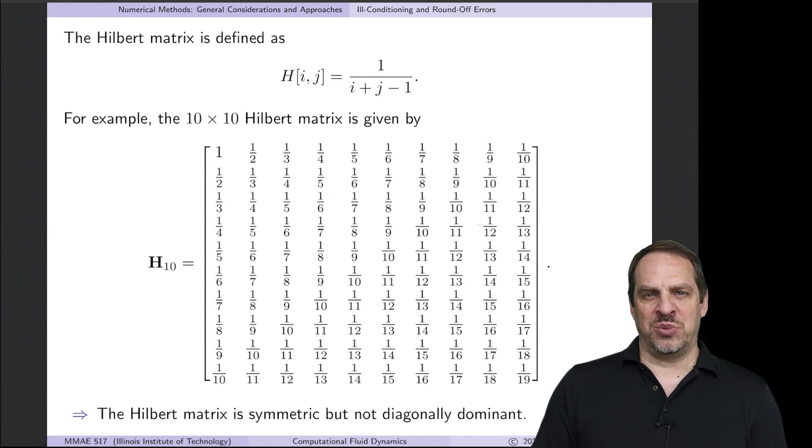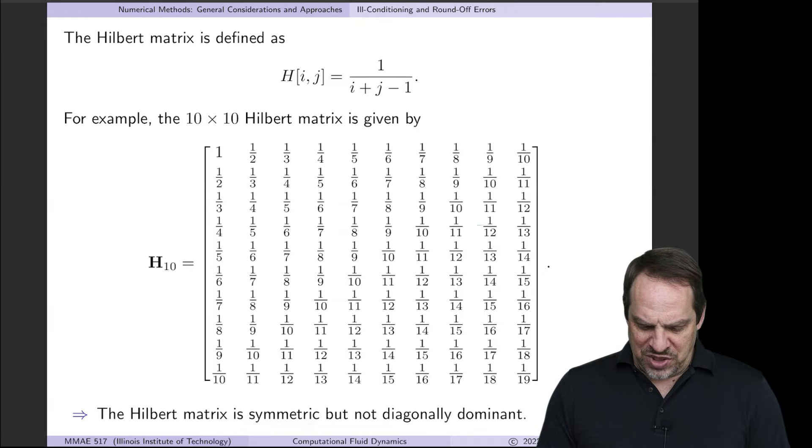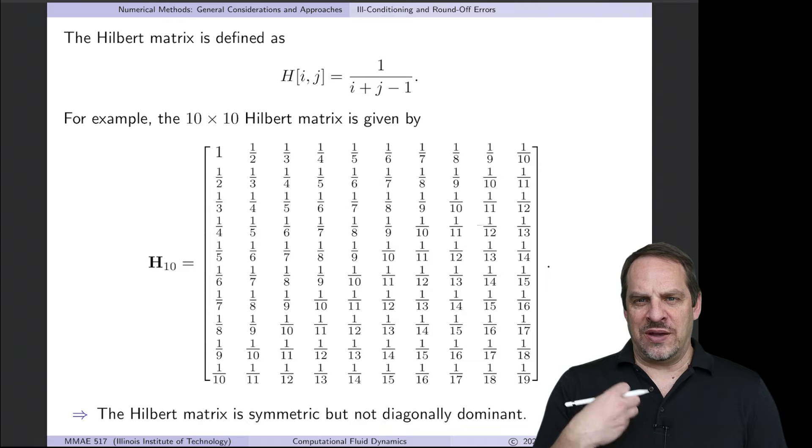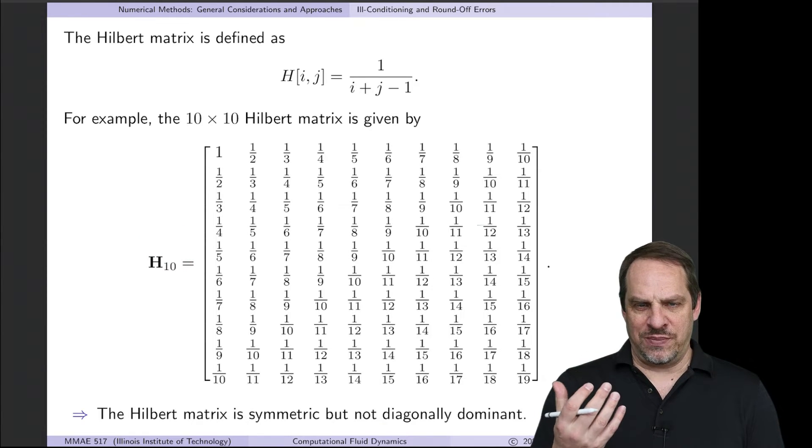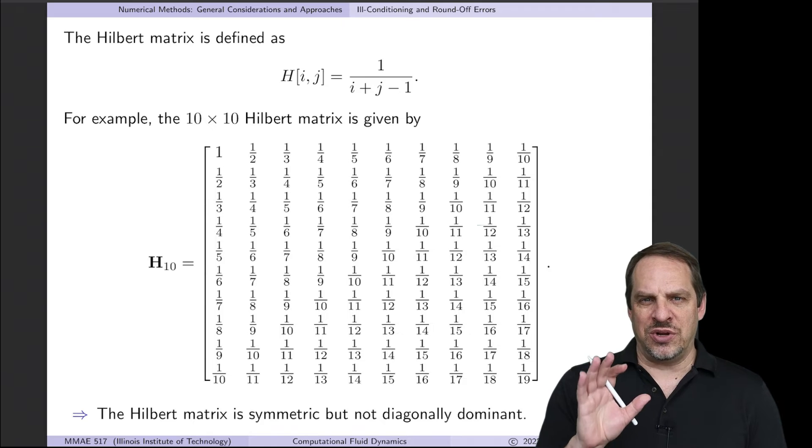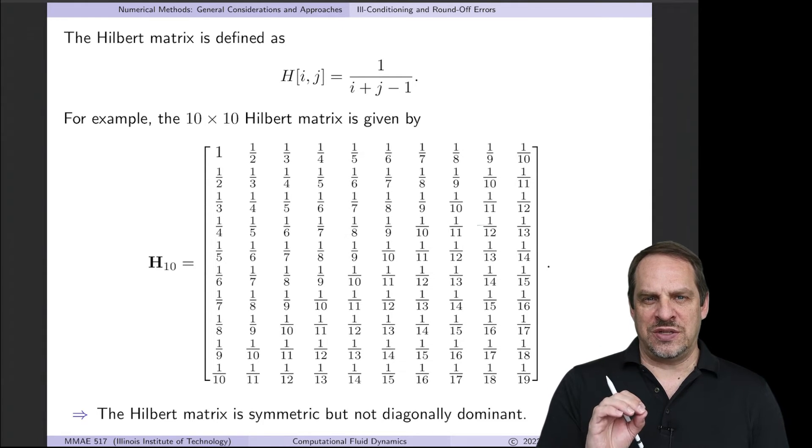You can try different sizes of Hilbert matrices and run through the same things that I'm going to do here. Now, the first thing you'll notice is the matrix is symmetric, but it is not diagonally dominant. So if you just pick any one of these rows, you can see that it is not diagonally dominant. So we would expect from that point of view to have issues trying to invert this Hilbert matrix and so on. But we're going to use the condition number in addition to quantify how inaccurate those processes may be and test whether that is the case.